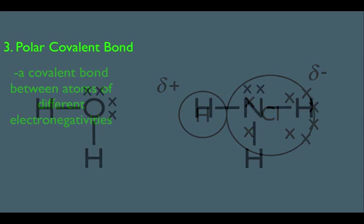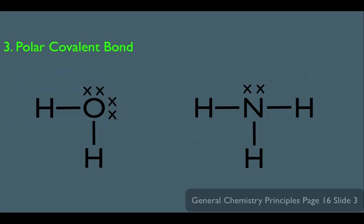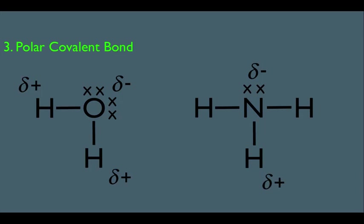We can have molecules that have more than one polar covalent bond. For instance, water has two polar bonds, because the oxygen is more electronegative than the hydrogen. Ammonia also has more than one polar bond — the nitrogen is more electronegative than the hydrogen, so this molecule technically has three polar bonds in it.